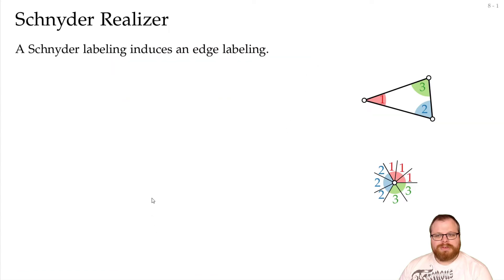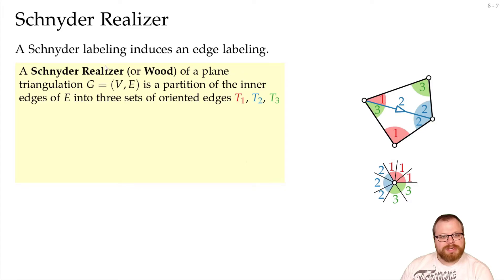From this labeling, we will get a realizer. And a realizer is a labeling of the edges instead of the angles. Now, let's have a look at two triangles here. We have our labeling for this triangle, and there also must be some labeling for this one. Now, on one of those two sides of the edge, both labels must be the same, and we will direct the edge towards this side. And we also give it the same label as the two labels of the angles on this side have. This way, for every edge, we get a direction and a label or a color. And now, this labeling gives us a Schnyder-realizer, sometimes also called a Schnyder-Wood,